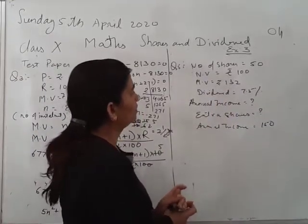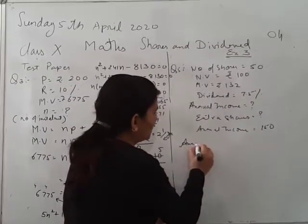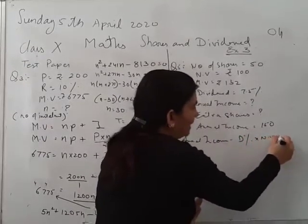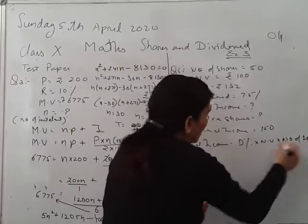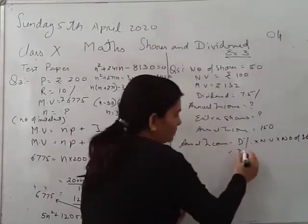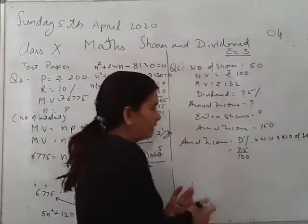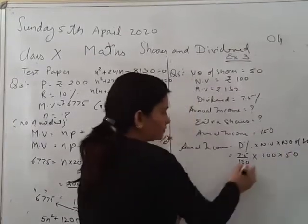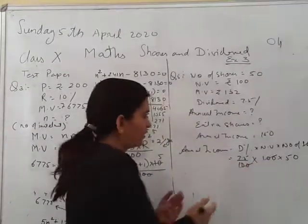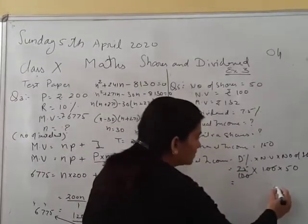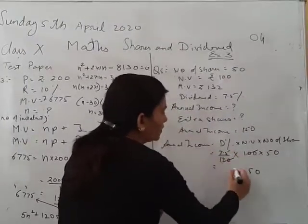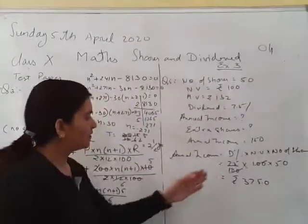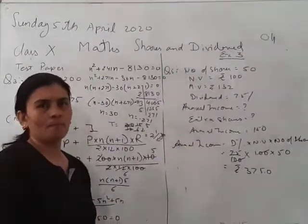Now the formula for annual income is: D% into nominal value into number of shares. Substituting: 7.5 by 100 into 100 into 50. The 100 cancels with 100. Multiplying 7.5 into 50 gives 375. So the annual income is rupees 375.